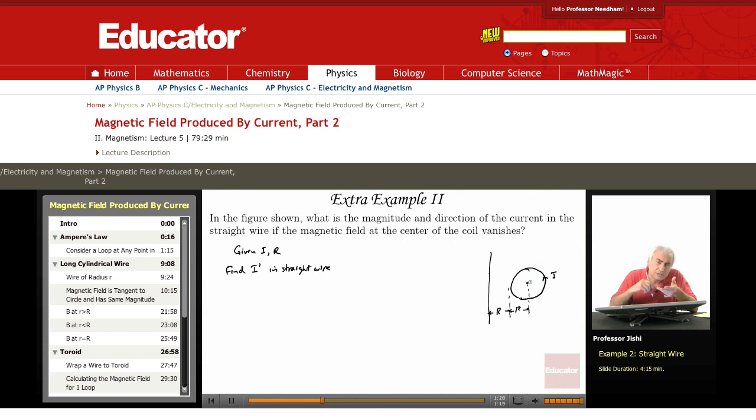So first of all, what should the direction of the current I prime be? Will it be up or down? For I, for the loop,